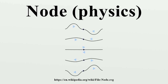A node is a point along a standing wave where the wave has minimum amplitude. For instance, in a vibrating guitar string, the ends of the string are nodes. By changing the position of the end node through frets, the guitarist changes the effective length of the vibrating string.